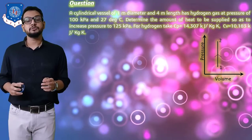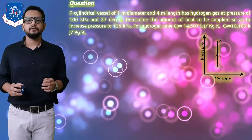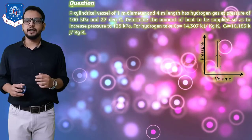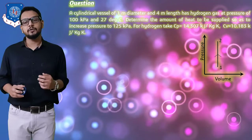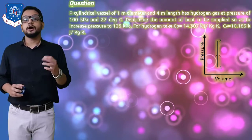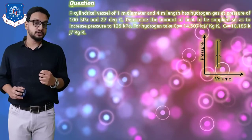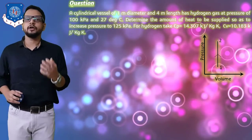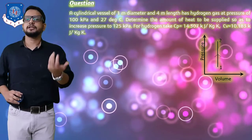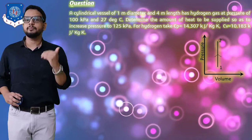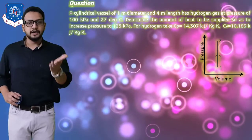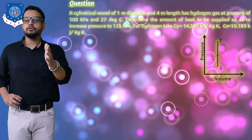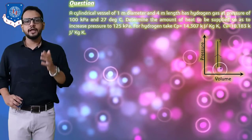For hydrogen gas, cp = 14.307 kJ/kg·K and cv = 10.183 kJ/kg·K. Since it is a cylindrical vessel with no piston, valve, or gas outlet mentioned, and pressure needs to increase with no volume change, this is clearly a constant volume process. We can determine the characteristic gas constant R = cp - cv directly from Mayer's equation.